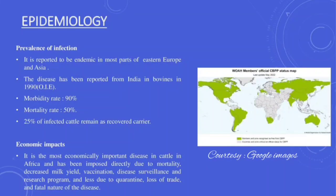Epidemiology of CBPP: The infection is reported to be endemic in most parts of Eastern Europe and Asia. The disease has been reported from India in bovines in 1990. Morbidity rate is very high at 90%, and mortality rate is 50%. Twenty-five percent of infected cattle remain as recovered carriers. CBPP is the most economically important disease in cattle in Africa, with economic impact due to mortality, decreased milk yield, vaccination, disease surveillance, research programs, quarantine, loss of trade, and the fatal nature of the disease.